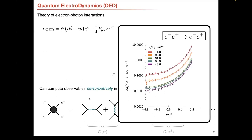By and large, this technique works. Here is an example of electron-proton scattering at various energies — 14, 22, and so on — with different colors. The points represent experimental data values as a function of the scattering angle, and the solid lines represent theoretical predictions up through second order. You see it generally works out fine. Quantum electrodynamics is a huge success because of this, and it's the basis of all our modern theories of particle physics.